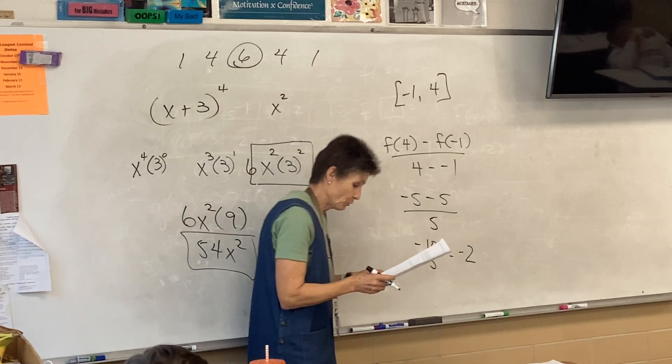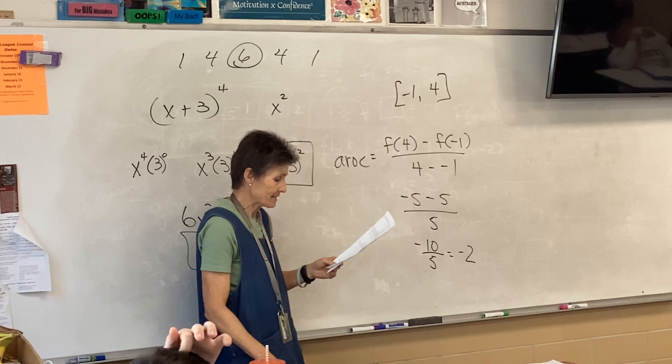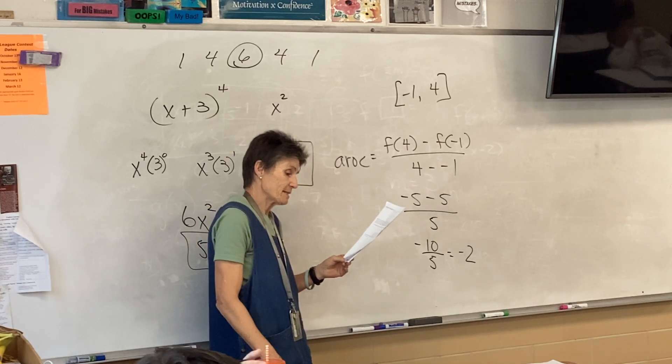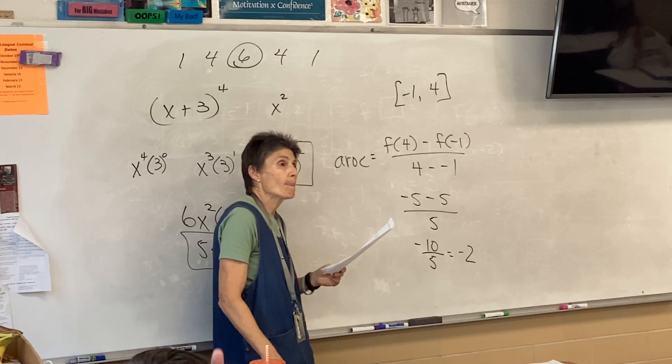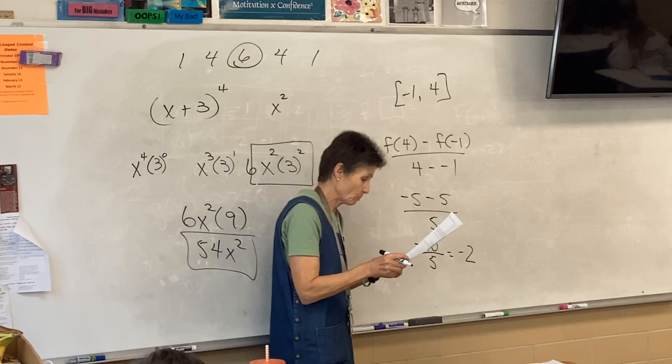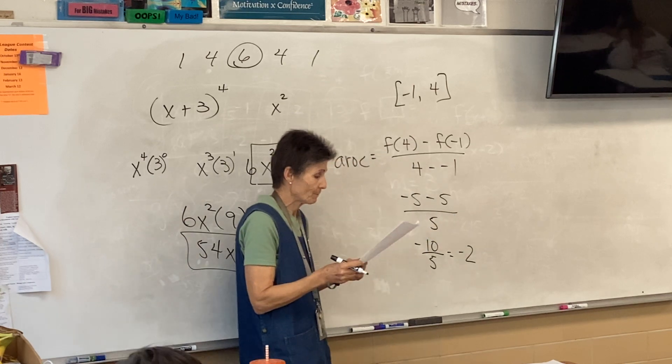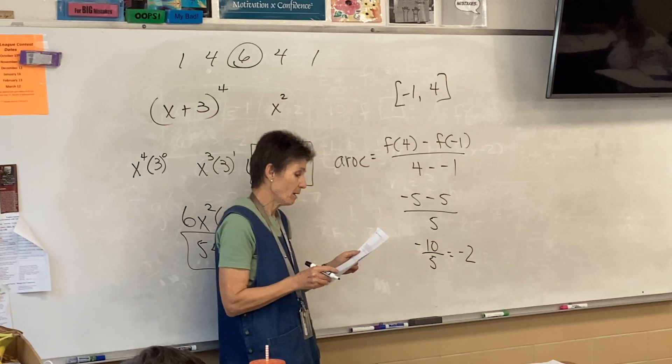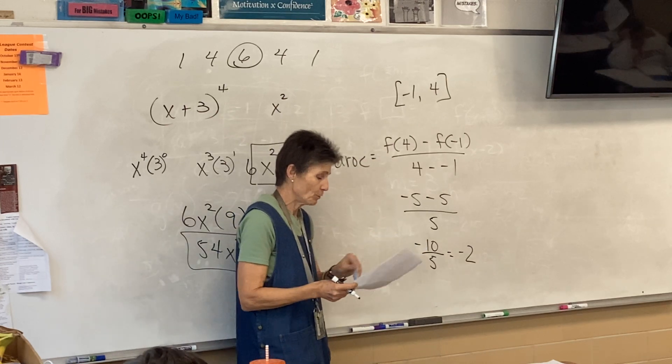Which root in problem C, which root has a multiplicity of two? Negative four. Negative four. Perfect. X equals negative four. Beautiful. Might as well do A on this page. What is the degree of that polynomial? Four. Four. Beautiful.